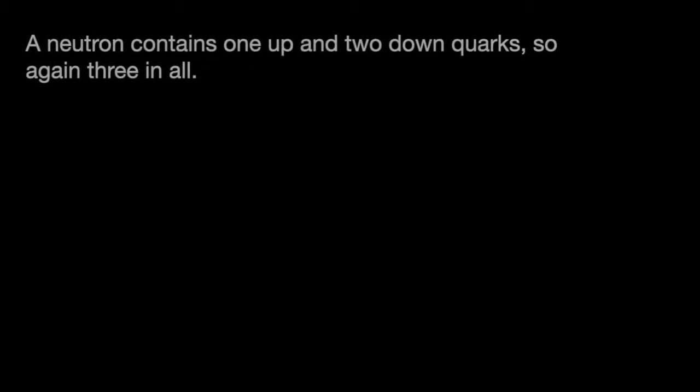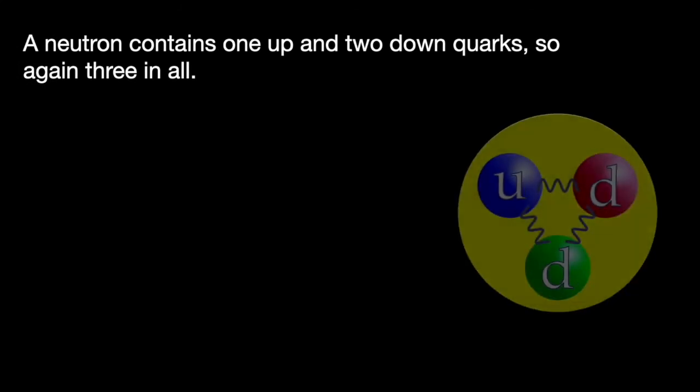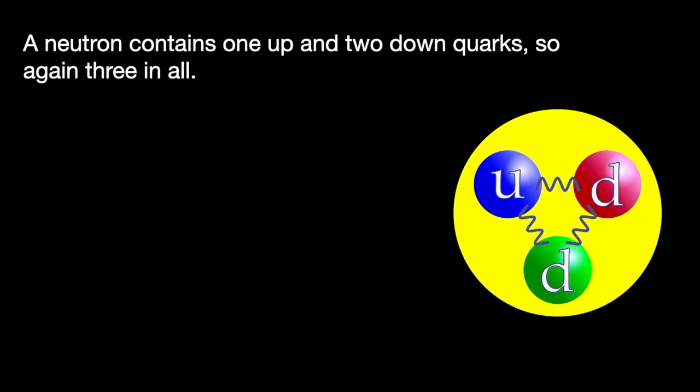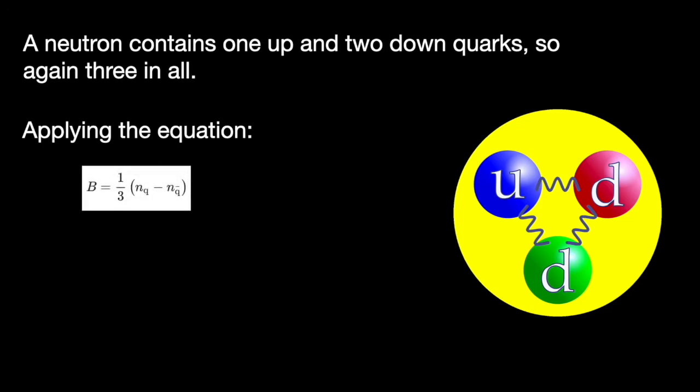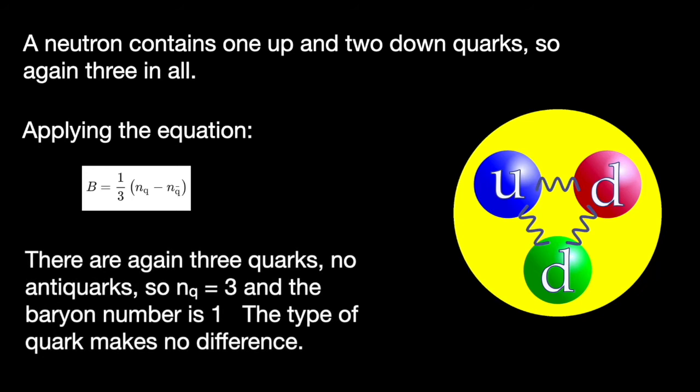The calculation for a neutron is almost identical. A neutron has one up quark and two downs. Three quarks in all. So applying this to the equation NQ is three. NQ bar is zero. Three minus zero is three. So a third of three is one.